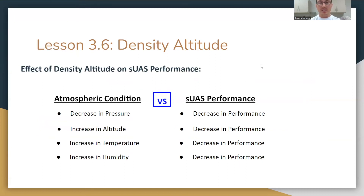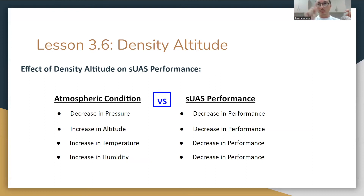The effects of density altitude on SUAS — they will test on this. A decrease in pressure decreases the performance of your drone. An increase in altitude decreases performance — the air is thinner, there are fewer air molecules for the propeller blades to hit to generate lift. An increase in temperature decreases performance. An increase in humidity decreases performance. Know all of these — they are going to test these things on the exam.